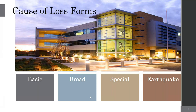With property policies, we have cause of loss forms — a form that lists covered perils. The common ones are basic, broad, and special. We have those with dwelling and homeowner's policies, and for commercial property we add earthquake as a fourth. In a commercial property policy, you might actually have two cause of loss forms, such as broad and earthquake. Earthquake is a named peril form because it specifically names earthquake as a covered loss.